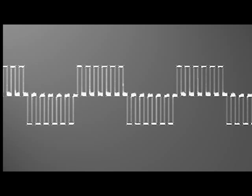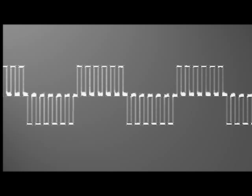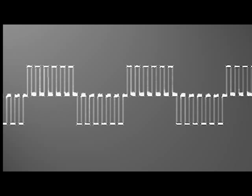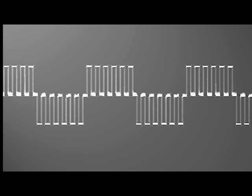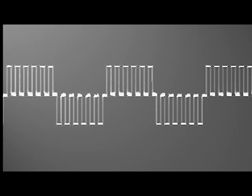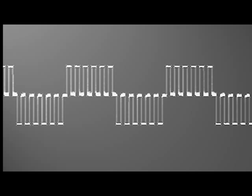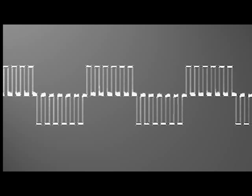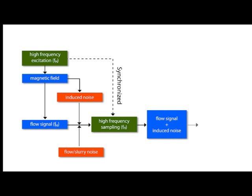Dual frequency excitation utilizes the benefits of both the high frequency and low frequency excitation methods. It has excellent zero stability from the low frequency of approximately 6 hertz, and the fast response and noise immunity from the high frequency of 75 hertz, all in one excitation method. The electrode signal is processed in parallel by a high frequency algorithm and a low frequency algorithm, the outputs of which are similar to that of an AC magmeter or DC magmeter. The slurry noise averages to zero, utilizing the output of the high frequency method.